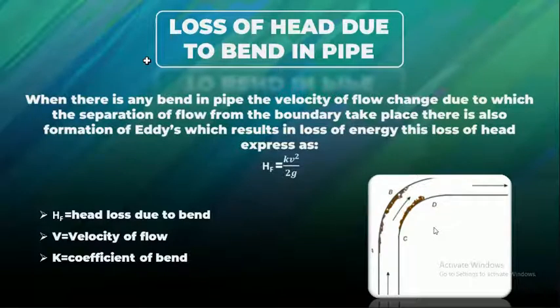This loss of head equals h_f is equal to k times v squared by 2g, where h_f is head loss due to bend, v is velocity of the flow, and k is coefficient of bend.